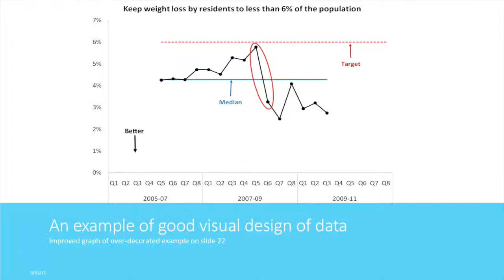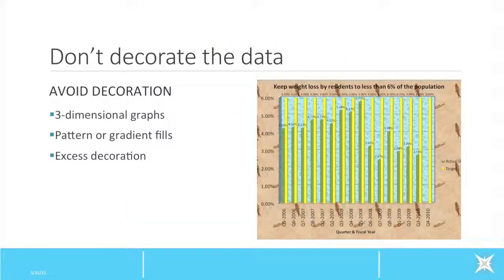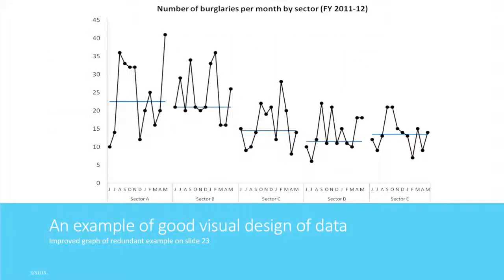This is the visually improved version of the over decorated graph. This graph compares five different sectors over the same time period. You are now able to see which sector has more burglaries per month. This is the visually improved version of the redundant graph.